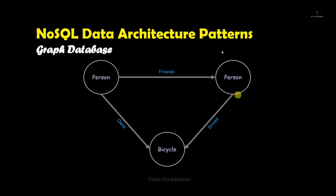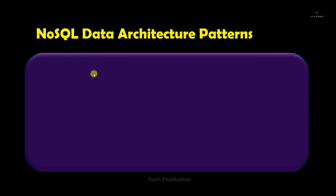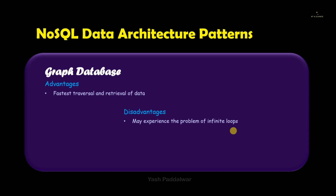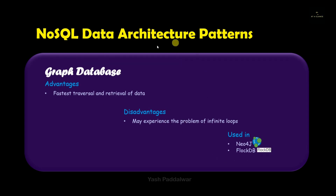Similarly in graph databases, millions of nodes connect to each other and establish relationships, storing information in this particular way. The first advantage is that it results in the fastest traversal and retrieval of data. Because nodes are connected to each other, we can easily traverse through the entire graph, which increases the traversal rate. The disadvantage is that if wrong relationships are established between any two nodes, then the problem of an infinite loop may occur. Graph databases are popular and widely used nowadays. Examples include Neo4j and FlockDB.